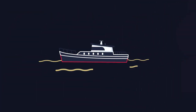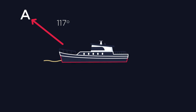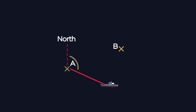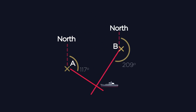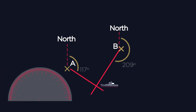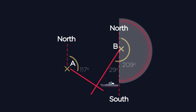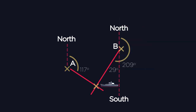It's also possible to find a location using two others. A ship at sea is on a bearing of 117 degrees from town A and a bearing of 209 degrees from town B. Locate the ship. We can draw a bearing of 117 degrees from town A and a 209 degree bearing from town B. If you only have a 180 degree protractor, you can draw from the south line and measure 29 degrees clockwise, as 29 plus 180 equals 209. Where the lines intersect is the point the ship lays at.